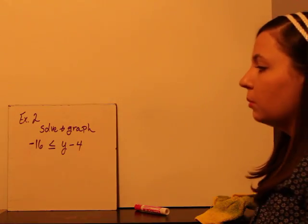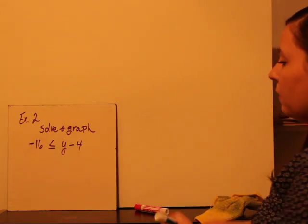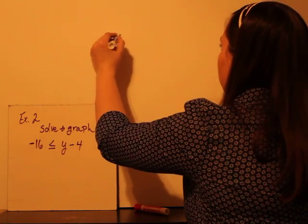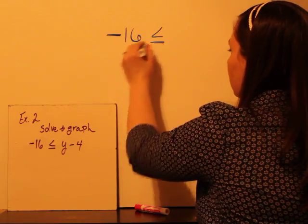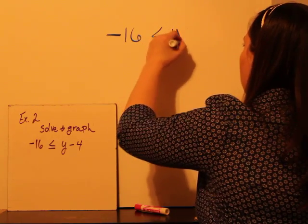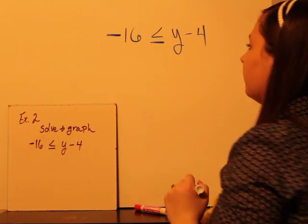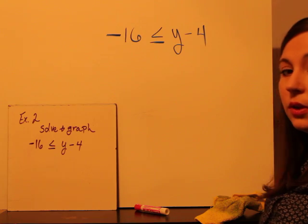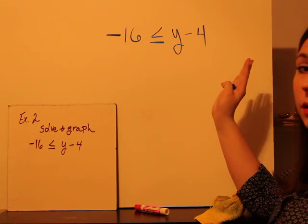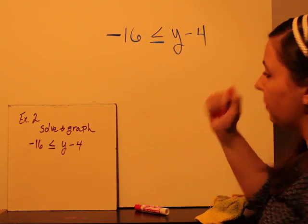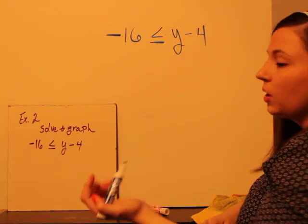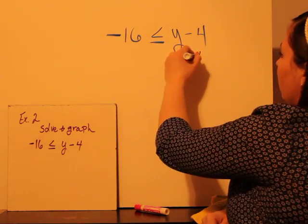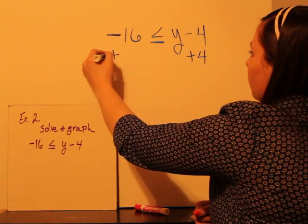Now we've got example number 2. We're going to solve and graph negative 16 is less than or equal to y minus 4. Now this one's a little bit different because there are variables on the other side there, but don't let that trip you up. So we've got a y and we're subtracting 4. We get rid of subtracting 4 with adding 4. So we're going to add 4 over here as well.